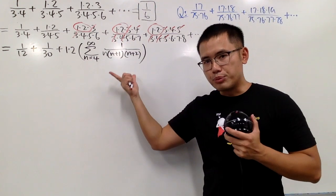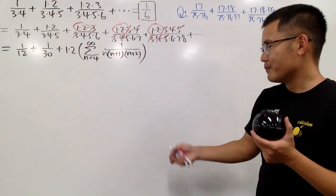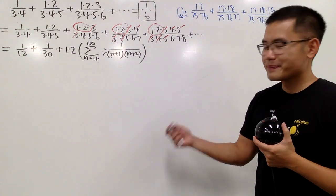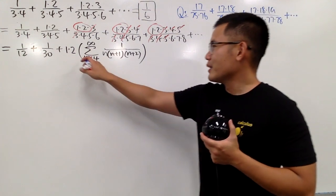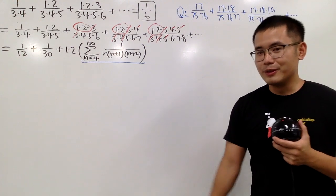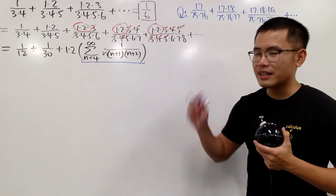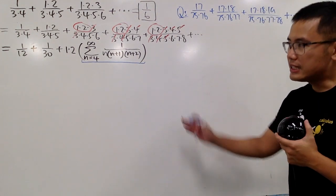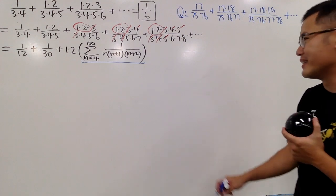And this right here is a pretty standard, but rather difficult, telescoping sum. So this right here is much more doable. Right? And we can just do some partial fractions, and we'll see some nice cancellation, and that will be it. So that's how we will finish this up. And let's finish it, and then we'll talk about that right there.